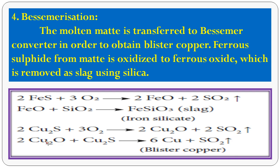The remaining copper sulphide reacts with copper(II) oxide to form blister copper. Blister copper contains 98% copper and 2% impurities, plus SO₂ gas is released.